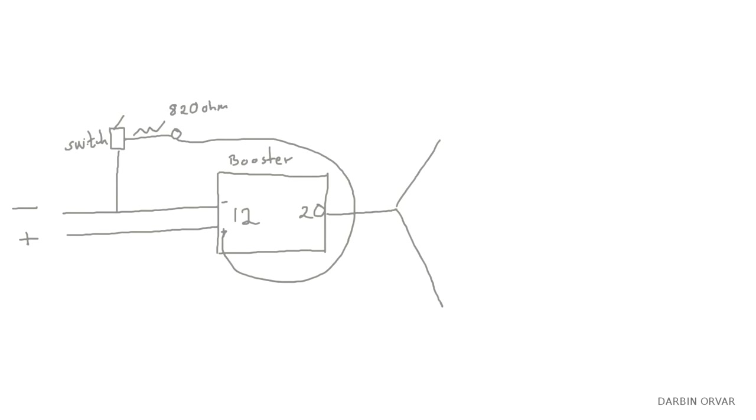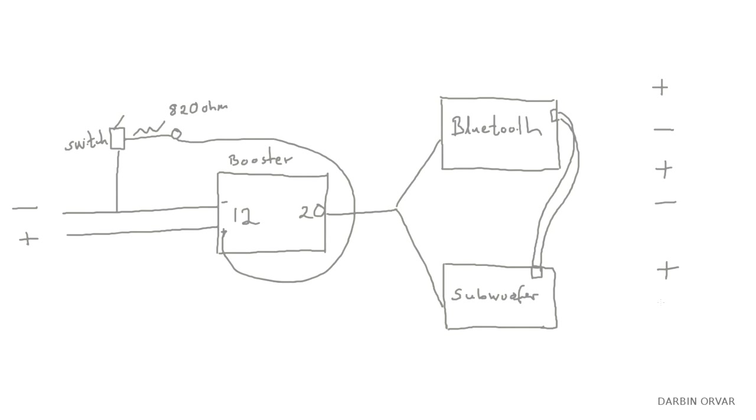Off the booster, the power splits in two and goes into two amplifiers. One is a bluetooth amplifier which connects to the satellite speakers, and the other is a low-pass subwoofer amplifier which connects to the subwoofer. Both the speakers and the amplifiers are 8 ohms.